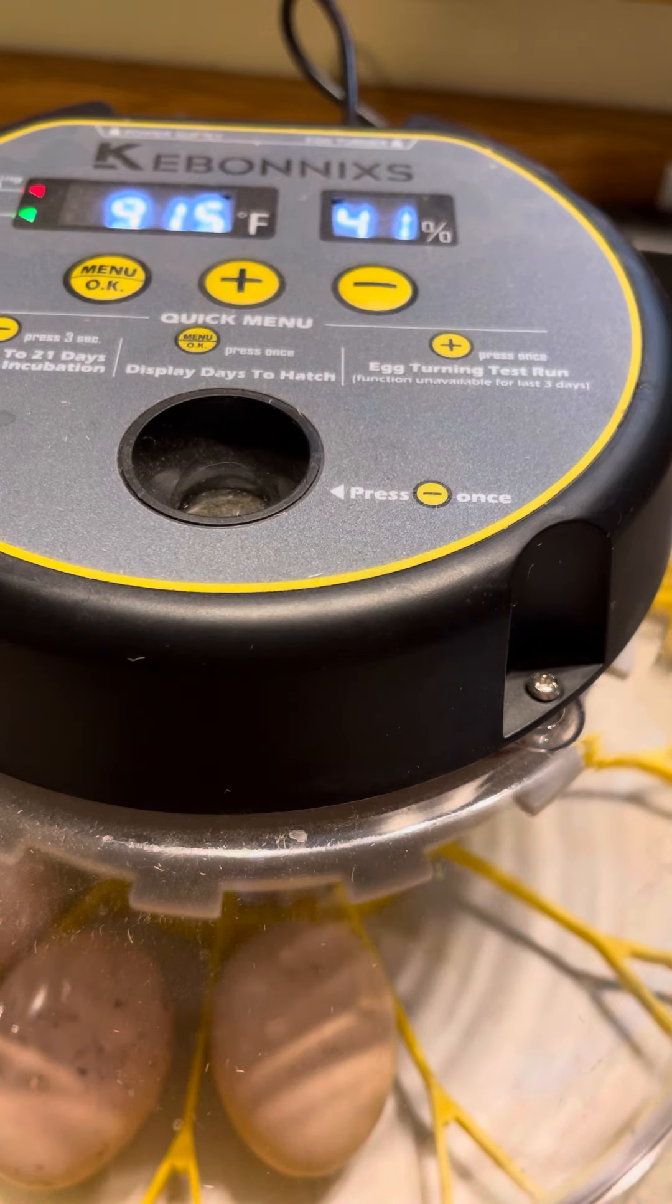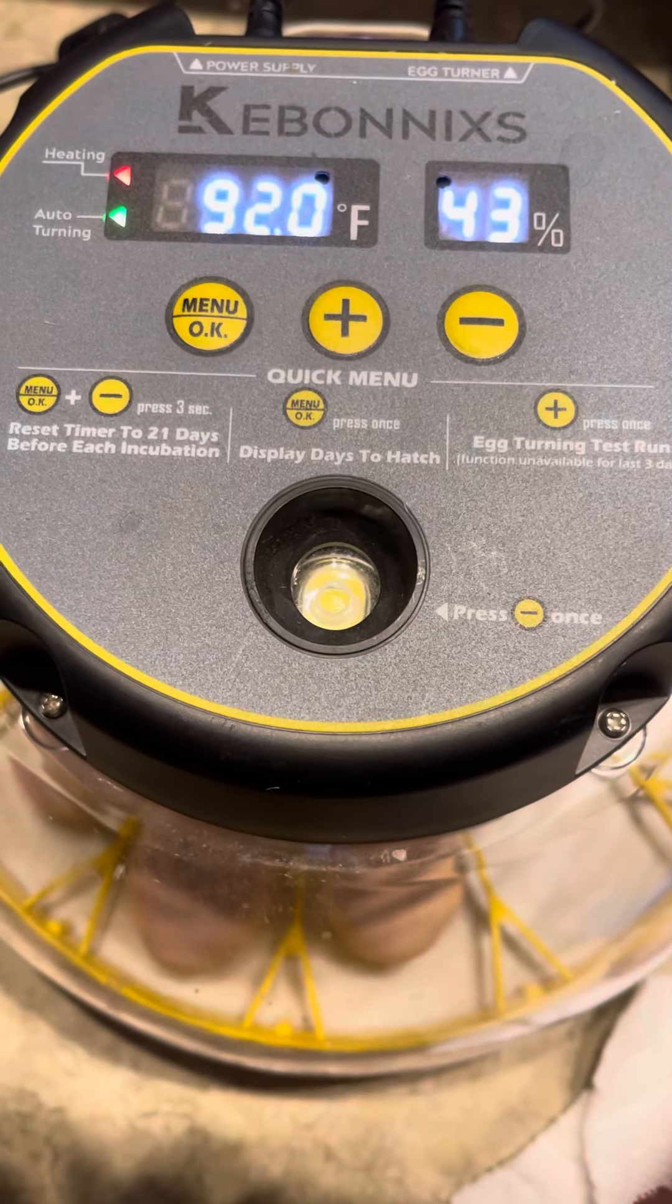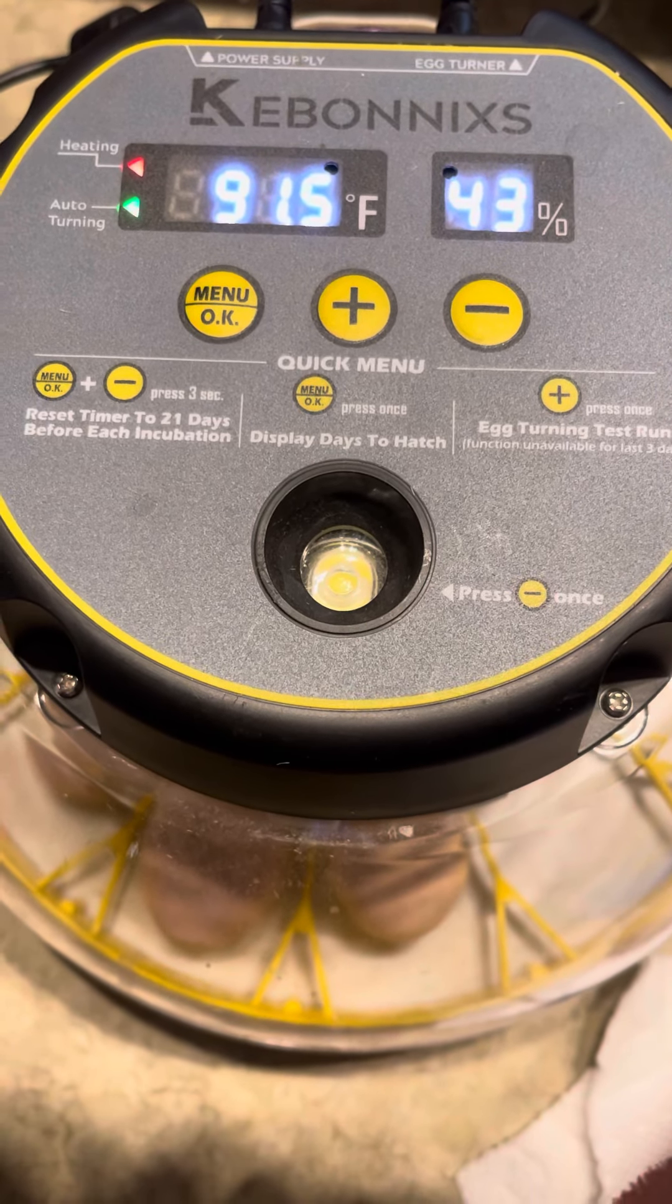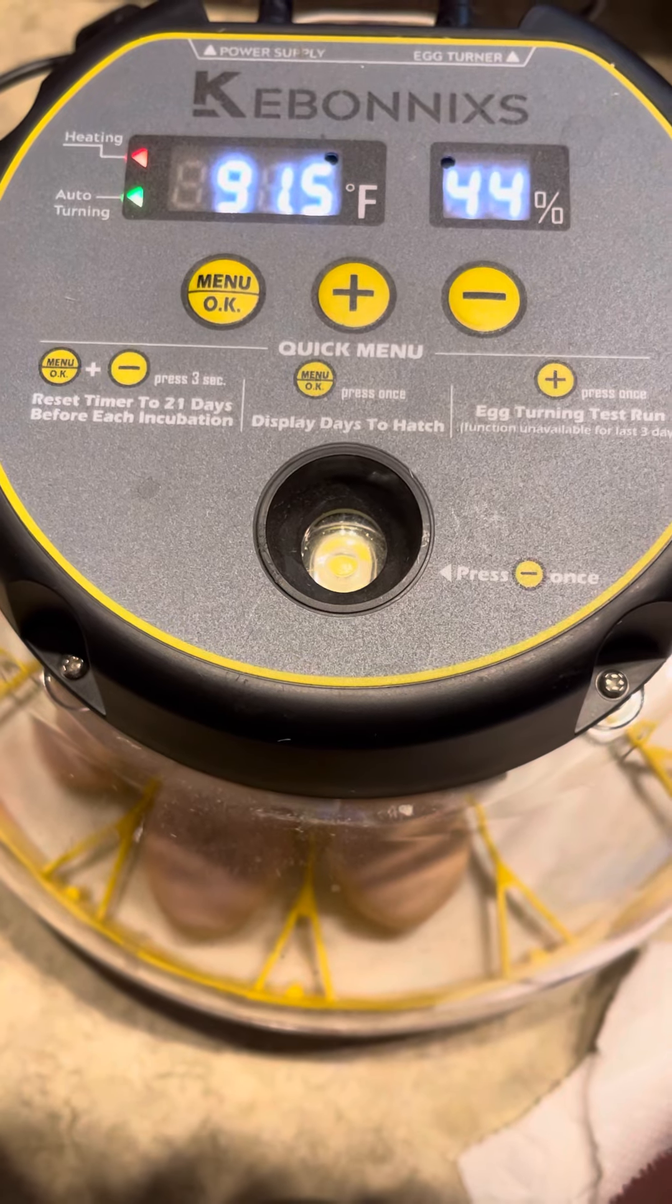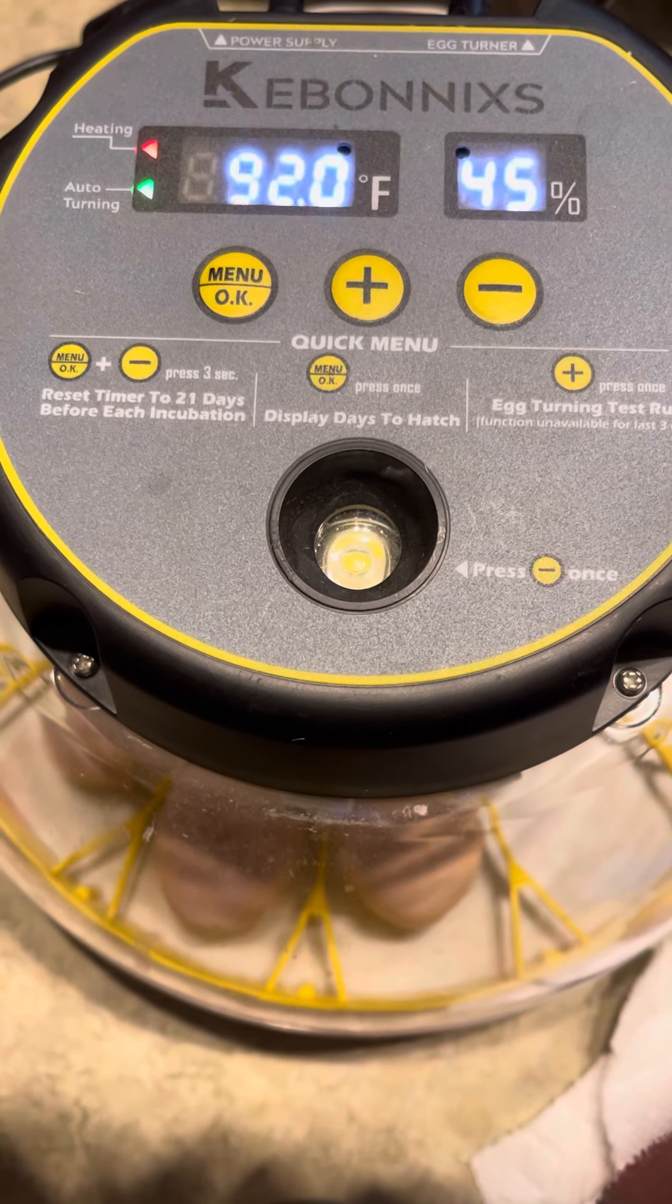You want to make sure for silkies or any other bantams or chickens that your temperature is at 99.5 degrees and the humidity is set between 50 to 60 percent. That's ideal for hatching small chickens, bantams, silkies, or any other chickens.